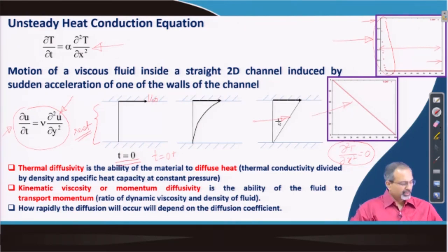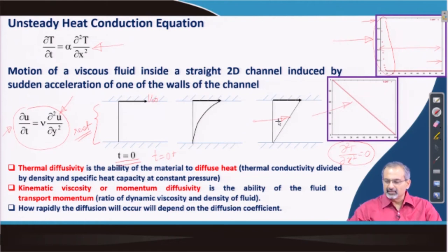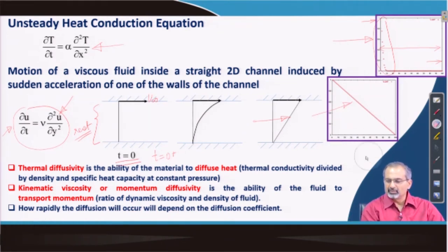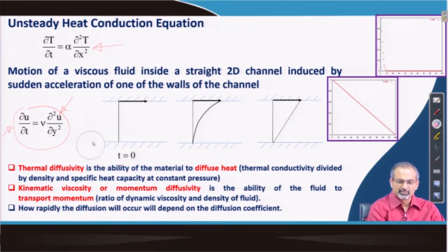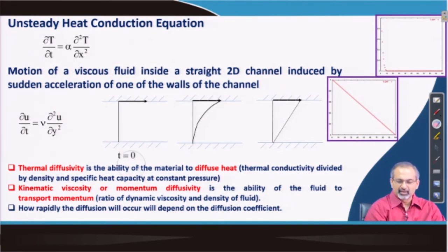Similarly, when we model momentum diffusion, momentum would diffuse through the gap and we would be able to reach a similar kind of linear distribution of velocity within the gap. We will quickly look back at the governing partial differential equation and how, from the Navier-Stokes equations, we can reduce it to a much simpler form used for modeling this problem.